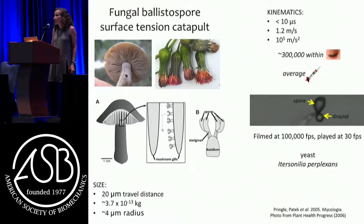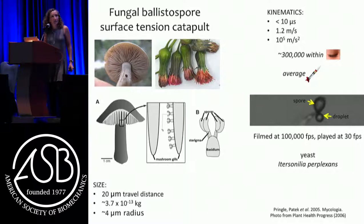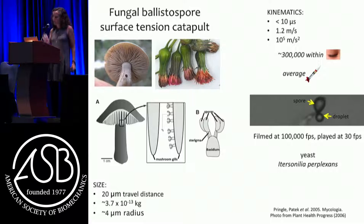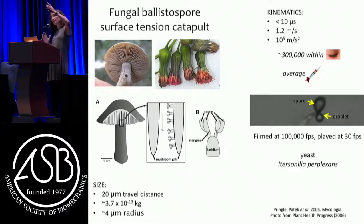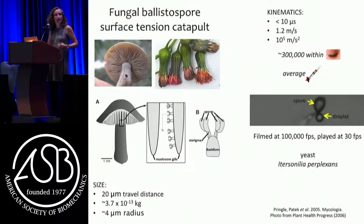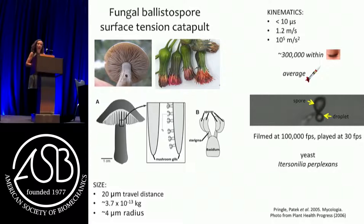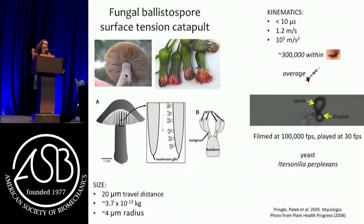A third example I work on are fungal ballistospores. There's no engine or muscle in the traditional sense, but the mechanism is still present across the fungi — including the mushrooms you eat. They grow a droplet on a stem, and there's a very thin layer of water on the spore surface. When that surface of water touches the growing droplet, they fuse and it launches the spore off the stem. The average acceleration is equivalent to a missile — 300,000 would fit within an eye blink — though they only go about a meter per second due to low Reynolds number. Their engine is essentially surface tension energy from a droplet: incredibly powerful motion.